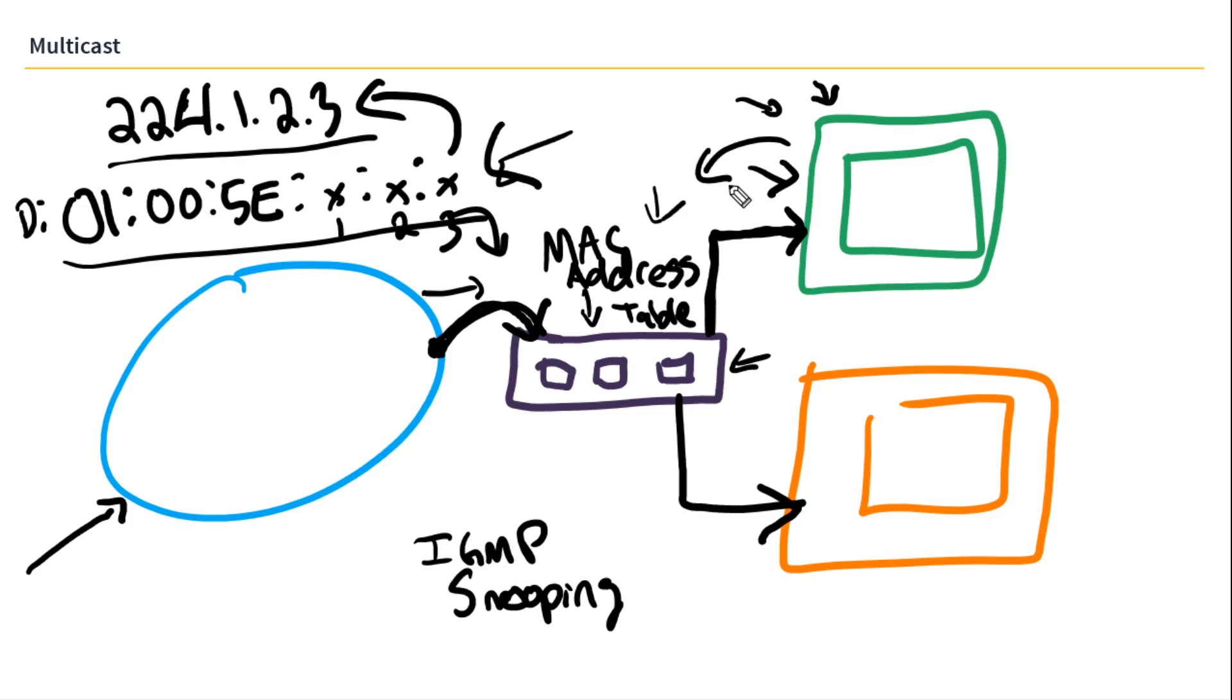That way, when the green client sends in its IGMP join request, basically saying, hey, Mr. Router, I want to listen to this group, the switch can then associate the destination MAC address with that port, and it will only ever be sent out the correct port again.